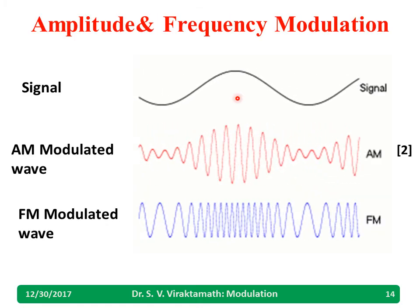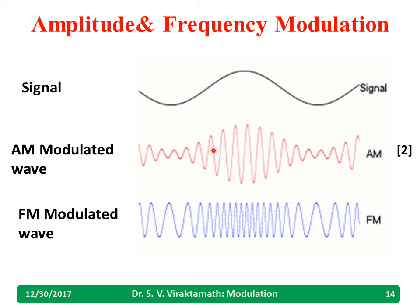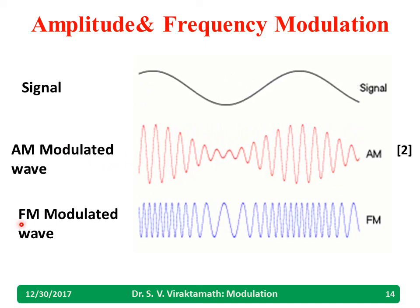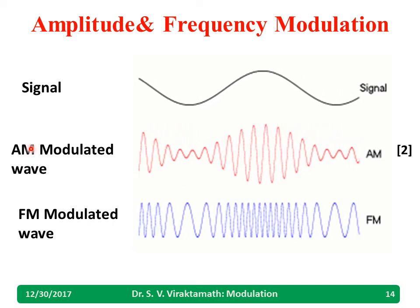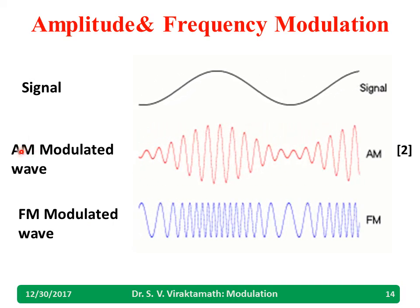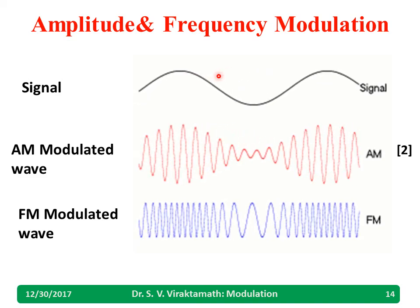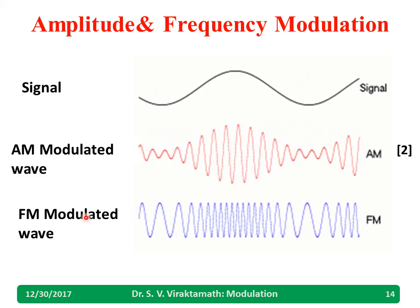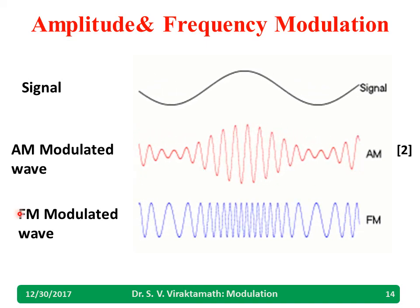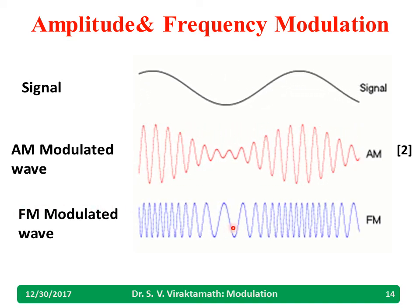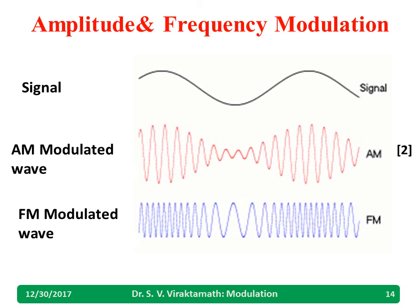This is how the AM modulated wave looks, and this is the FM modulated wave. AM means amplitude modulation — the amplitude is changing with respect to the audio signal. In FM modulation, the frequency is being changed — the frequency varies in accordance with the instantaneous value of the modulating signal.